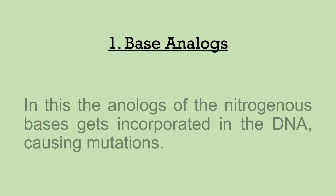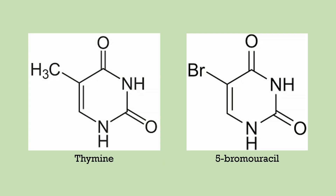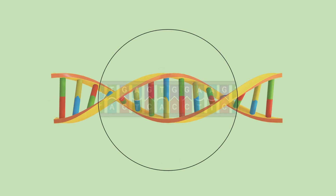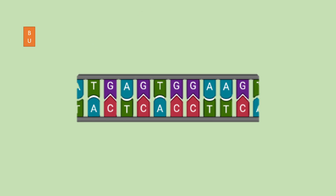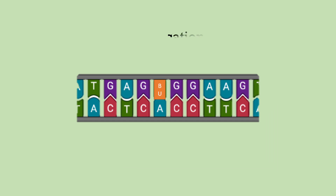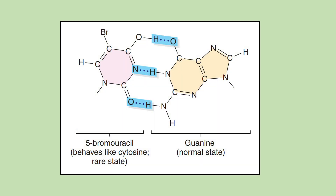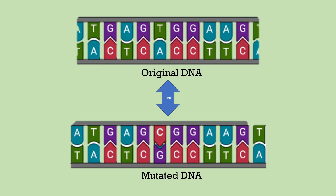Base analogs: in this type, analogs of the nitrogenous bases get incorporated into the DNA, causing mutation. For example, 5-bromouracil is an analog of thymine and gets incorporated in the DNA at the place of thymine. In its normal state it binds with adenine, causing no change. However, during replication it might change to its rare tautomeric state, which binds with guanine.